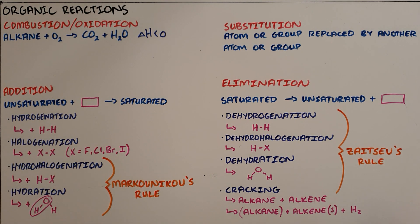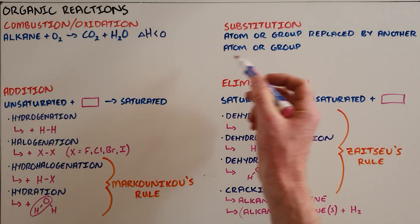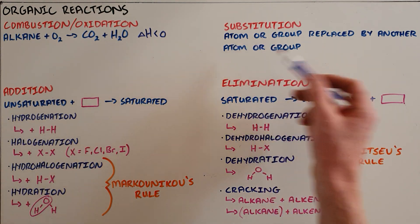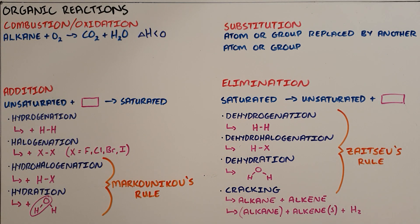The fourth and final type of organic reaction is a substitution reaction. This is where there is no change between a molecule being saturated or unsaturated. All that changes is that an atom or a group is replaced by another atom or a group. Typical examples here include a hydroxyl group that is replaced by a halogen group and vice versa.